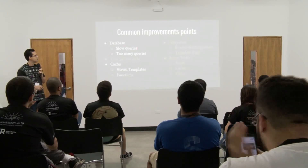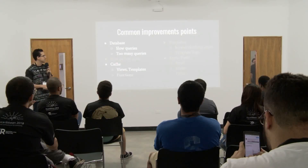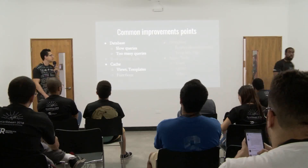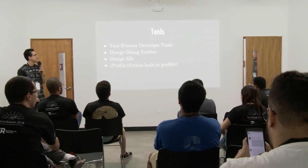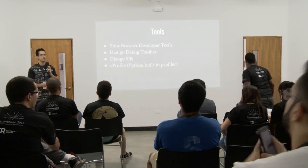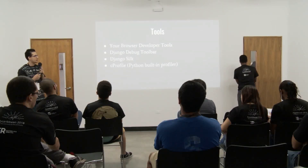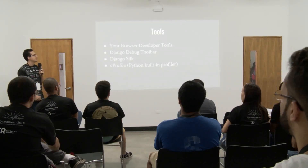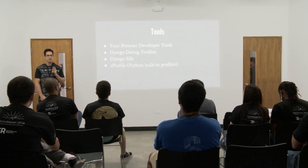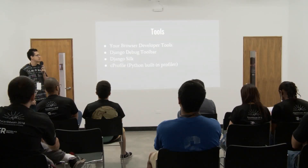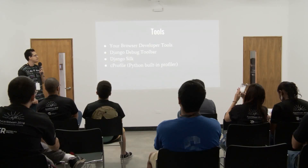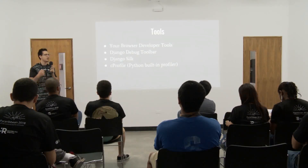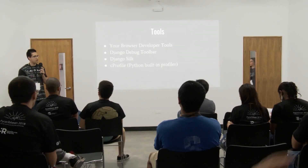We'll be focusing more on slow queries and this kind of stuff because that's where you'll see the most impact very quickly. There are many tools you can use to understand what's happening on your system. The first thing to do is use your browser developer tools — Chrome developer tools, Firefox, or whatever — because almost all browsers let you see the response time for the server, how many resources you're downloading, how large your site is, and so on.